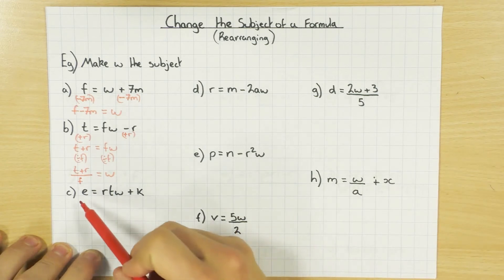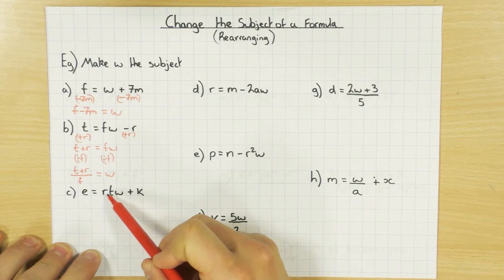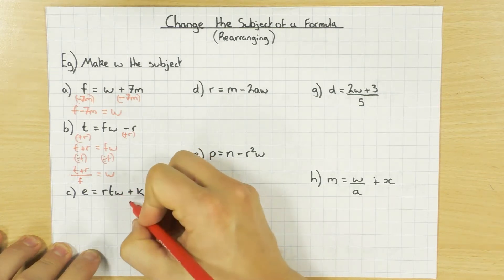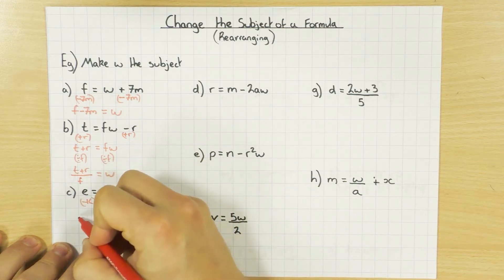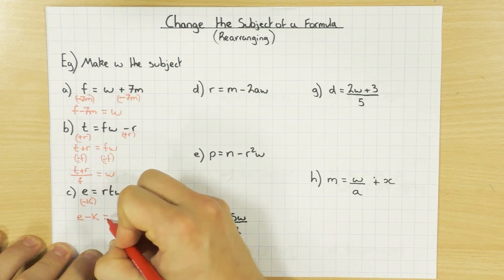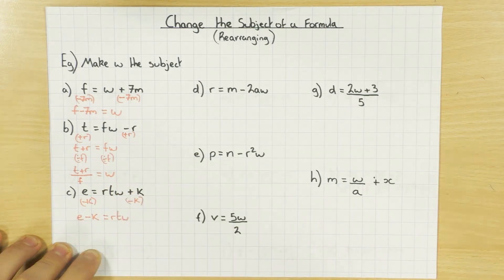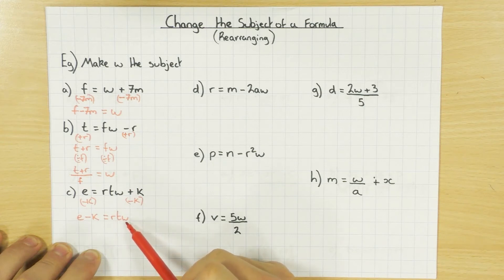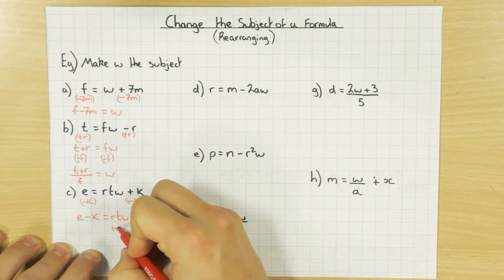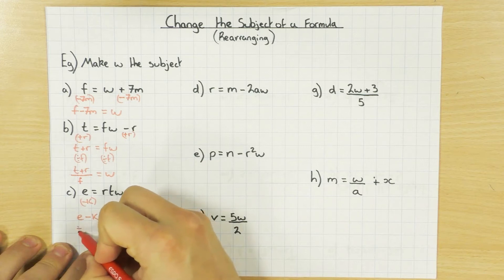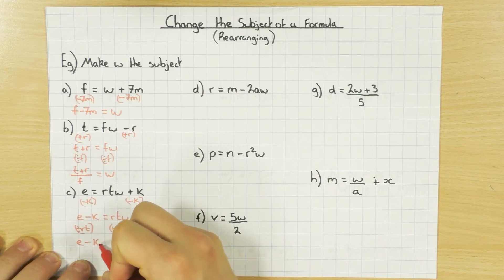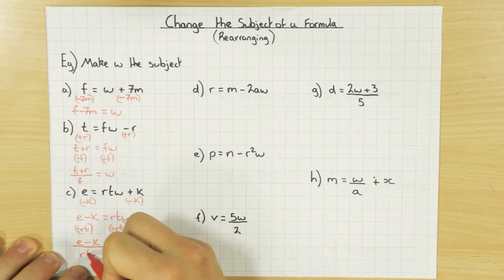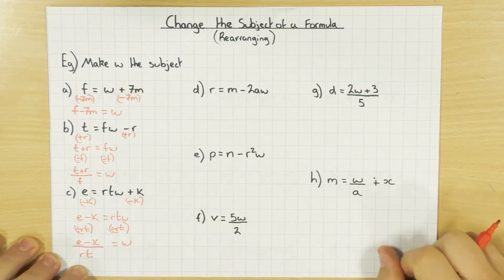I've got this plus K and W is being multiplied by RT. So get rid of the K first by taking away K from both sides. That gives E minus K equals RTW. This just means R times T times W, so I just want W — I can get rid of RT by dividing by RT. Dividing both sides by RT, I'm left with E minus K all divided by RT, and that equals W.